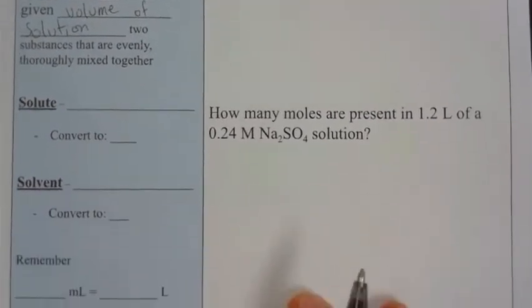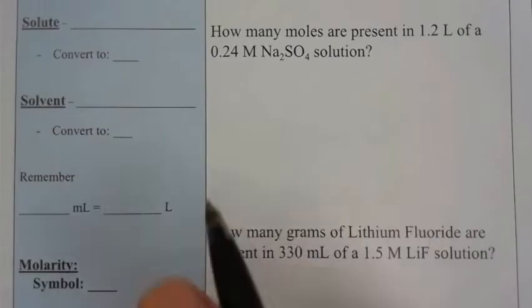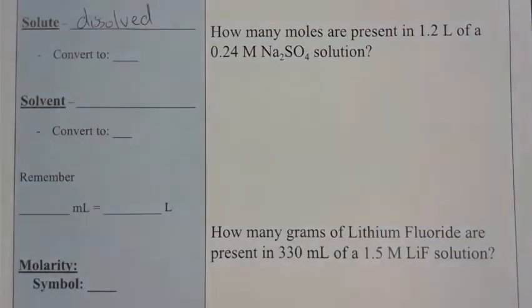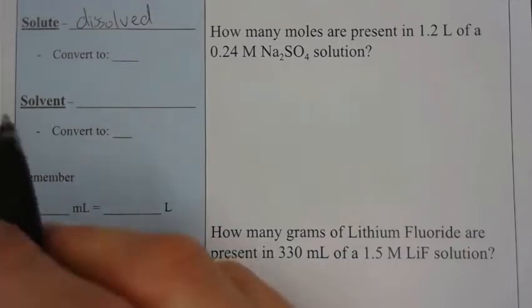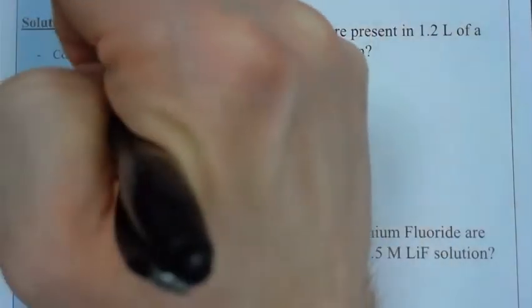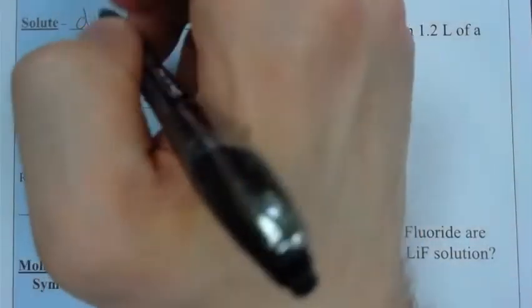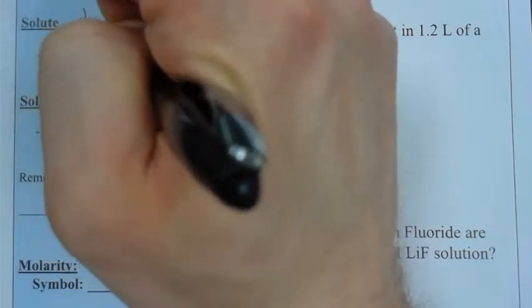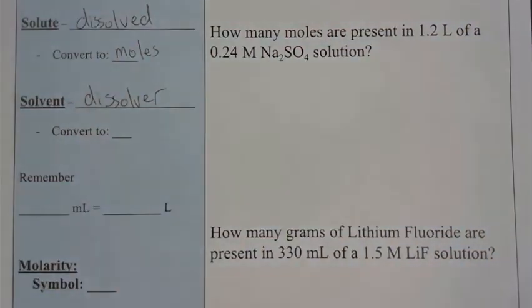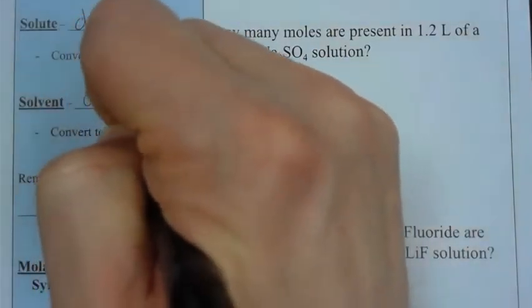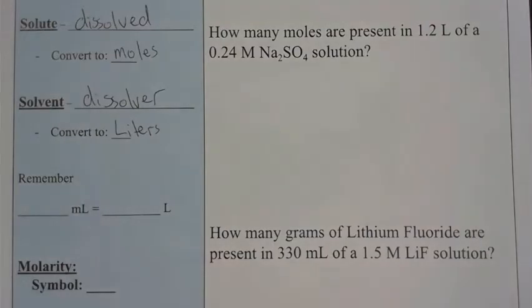To reiterate some terms from our last video, solute is the substance that's being dissolved. In the Kool-Aid example, the Kool-Aid powder is our solute and the water is our solvent. I always refer to the solvent as the dissolver. We want to convert our solute always into moles because molarity is a ratio of how much material is dissolved within the liquid, not by mass, but by number.